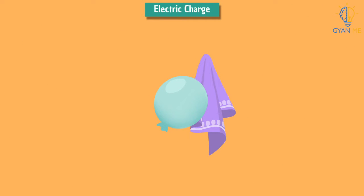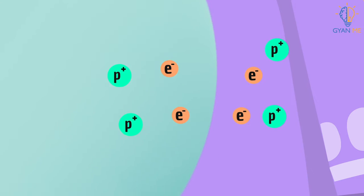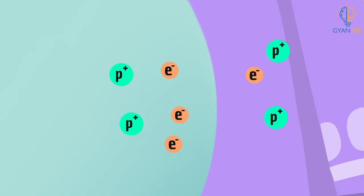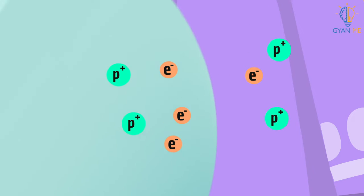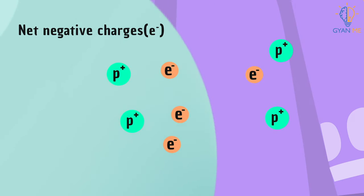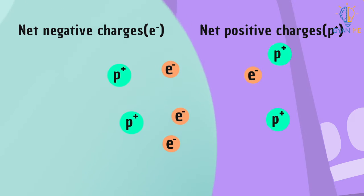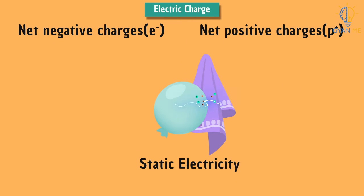However, when we rub two objects against each other, electrons are transferred from the surface of one object to the other surface due to friction. Thus, one of the surfaces acquires electrons from the other. The surface acquiring the electrons gets a negative charge and the surface losing the electrons gets a net positive charge. The outcome of this imbalance of charges on both surfaces is called static electricity.